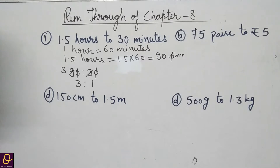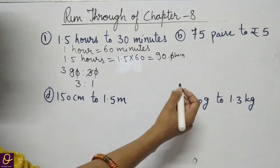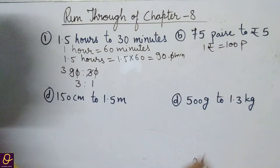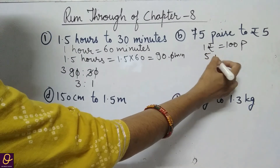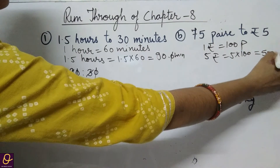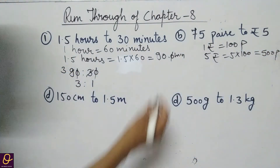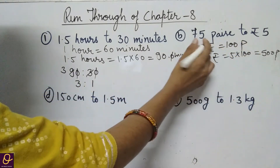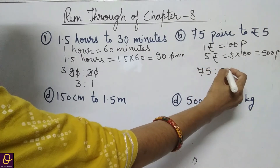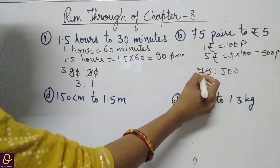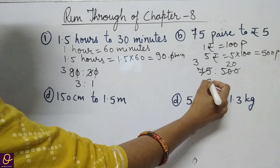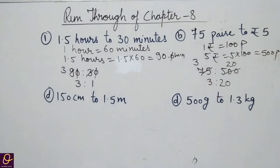Part B: 75 paise to rupees 5. We know that 1 rupee is equal to 100 paise, so 5 rupees will be equal to 5 into 100, that is 500 paise. Now the ratio is 75 to 500, which simplifies to 3 ratio 20.